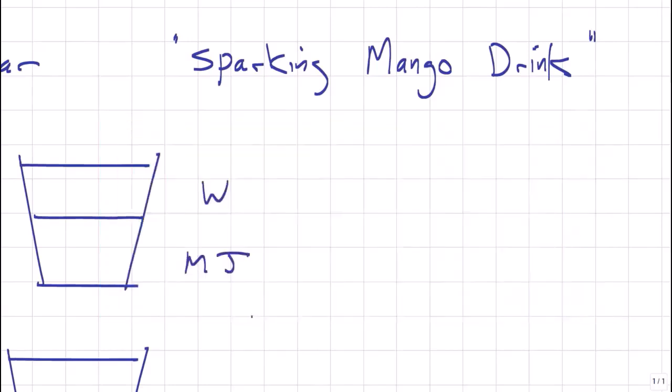And my sparkling mango drink has two raw materials. We have mineral water, that's W, and mango juice. Now from an exam point of view, it's very helpful and useful to understand which is the more expensive ingredient and which is the less expensive. So we can look here and it's the water will be the cheaper of the ingredients. The mango juice is the more expensive. That's going to help us a bit later.